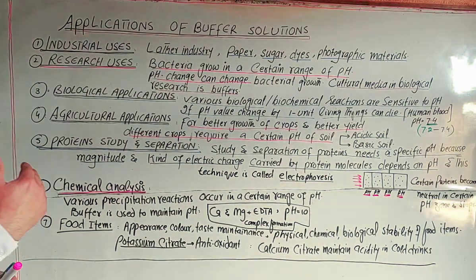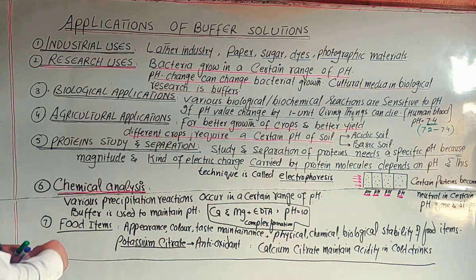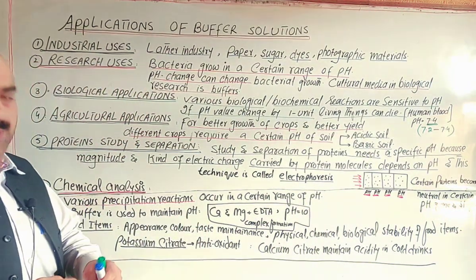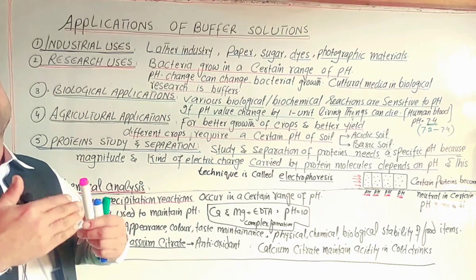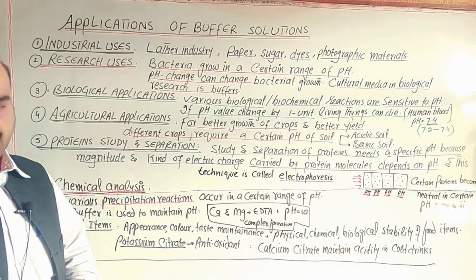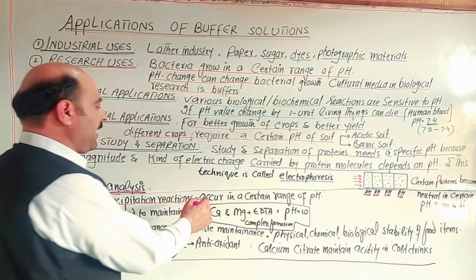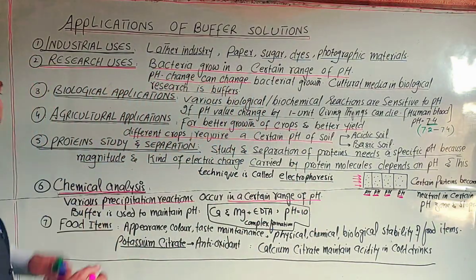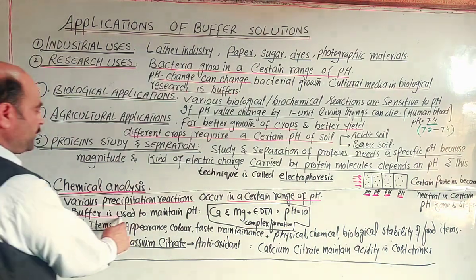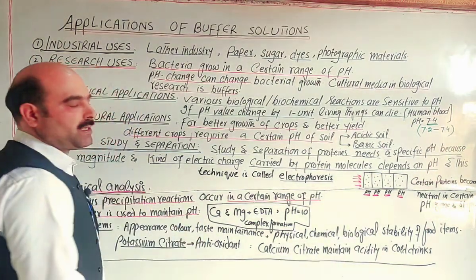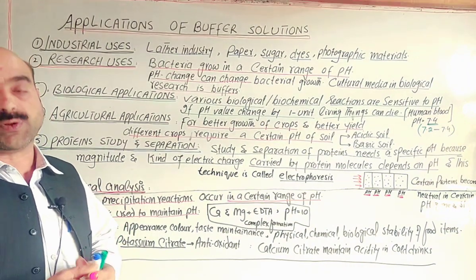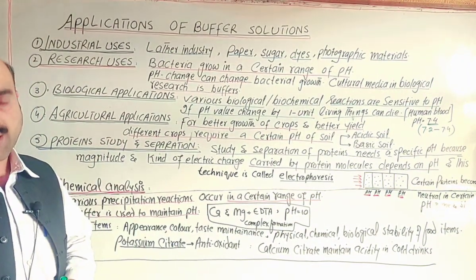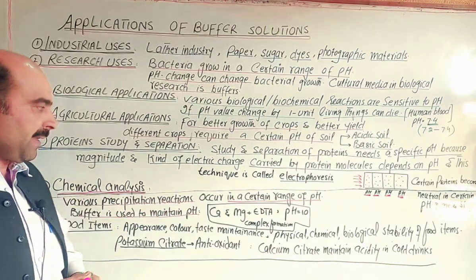Next is chemical analysis using buffer solutions. When various chemicals are analyzed, various precipitation reactions occur — chemical reactions during which a precipitate forms, where a compound with low solubility settles down as a precipitate — and these occur in a certain range of pH. Therefore, buffer is used to maintain pH so that the precipitation reaction can occur at that specific pH. If the pH changes, the precipitation will not occur and the separation cannot be done.